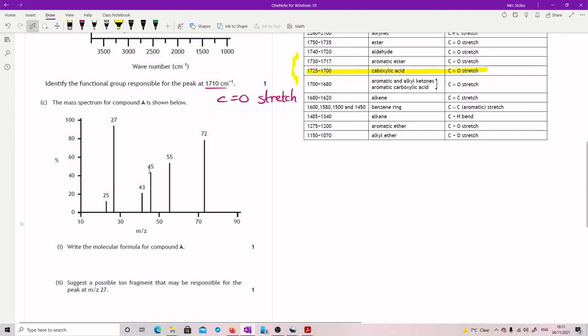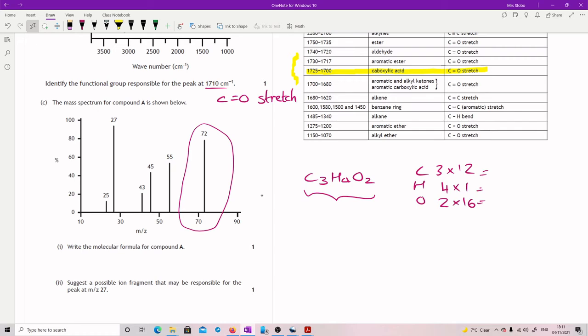We then get a mass spec for compound A. Write the molecular formula for compound A. Well you've already worked out that the empirical formula is C3H4O2. And what we have here is a molecular ion at 72. So I'm basically looking for how many multiples of this go into 72. So I'm going to say I've got three carbons, four hydrogens and two oxygens and four times one and two times 16. So 36, four and 32 gives me a total of 72. So I actually only have to do it once.